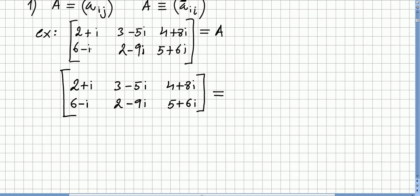I just got a very simple example of a matrix with complex entries. So we have in this position 2 plus i, 3 minus 5i, 4 plus 8i, 6 minus i, 2 minus 9i, 5 plus 6i. The same matrix here. Now if I want the conjugate I have to conjugate all entries.